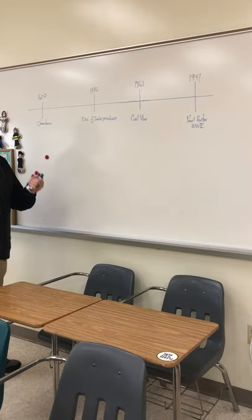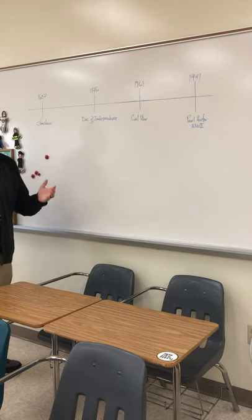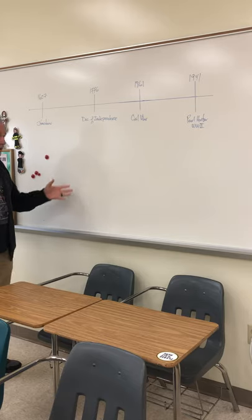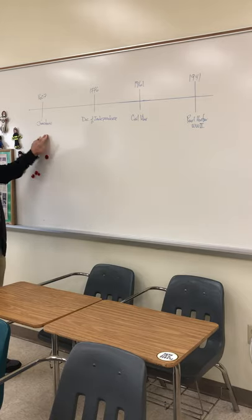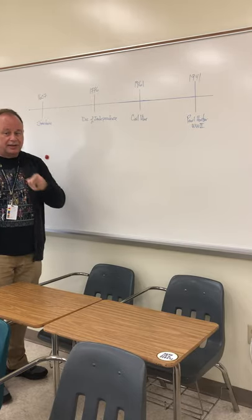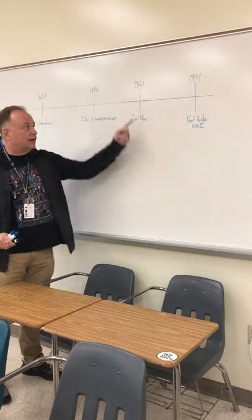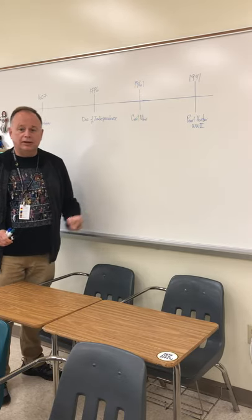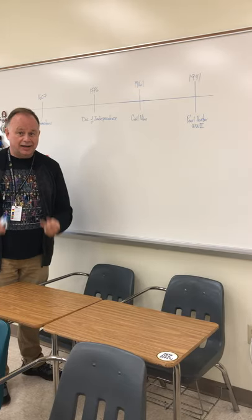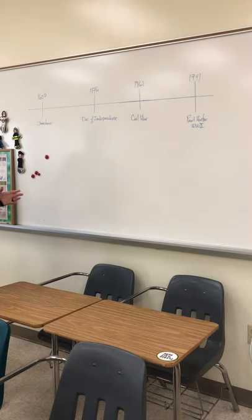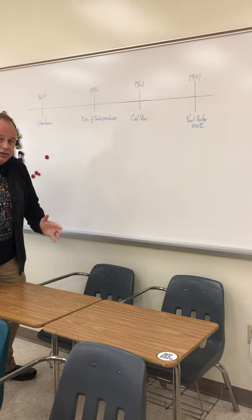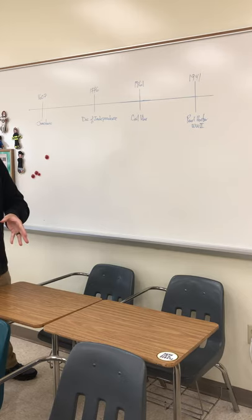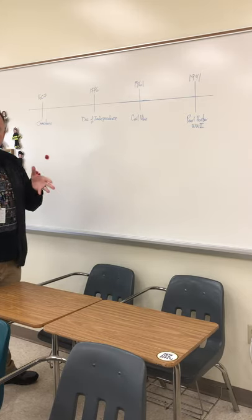I thought I'd demonstrate why I want you to draw a timeline. When you go to take your multiple choice tests, short answer, the DBQ, the long essay, you draw a quick little timeline: 1607 Jamestown, 1776 Declaration of Independence and the American Revolution, 1861 Civil War, 1941 Pearl Harbor — America enters WW2. But you also want to think in terms of what comes before and after each event, so you don't get confused when you go to write something.